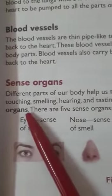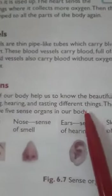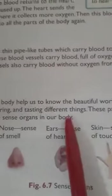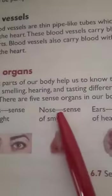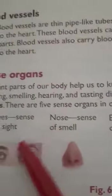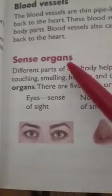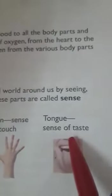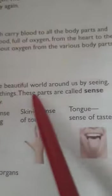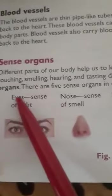Different parts of our body help us to know the beautiful world around us by seeing, touching, smelling, hearing, and tasting different things. Whatever is around us — natural or man-made — we can experience through our sense organs. There are five sense organs: eyes, nose, ears, skin, and tongue.